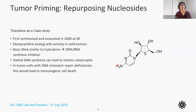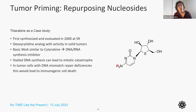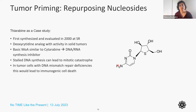The first program we'll talk about is repurposing of nucleosides. Southern Research has seven FDA-approved drugs, and most of those are nucleosides. Thiarabine was first synthesized and evaluated in 2000 at SR. It's a deoxycytidine analog with activity in solid tumors that works as a DNA-RNA synthesis inhibitor. Prolonged inhibition leads to mitotic catastrophe, which leads to immunogenic cell death. For tumor cells with DNA mismatch repair deficiency, this is highly advantageous.